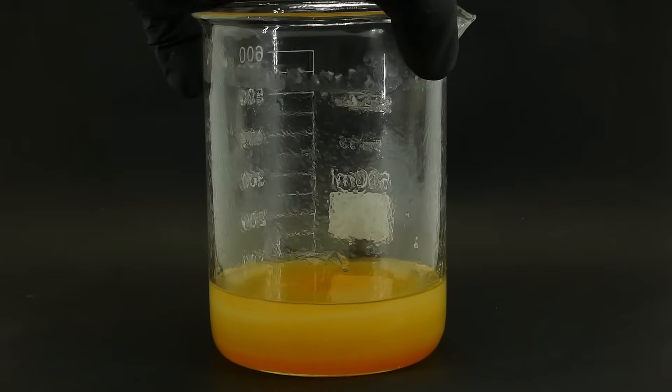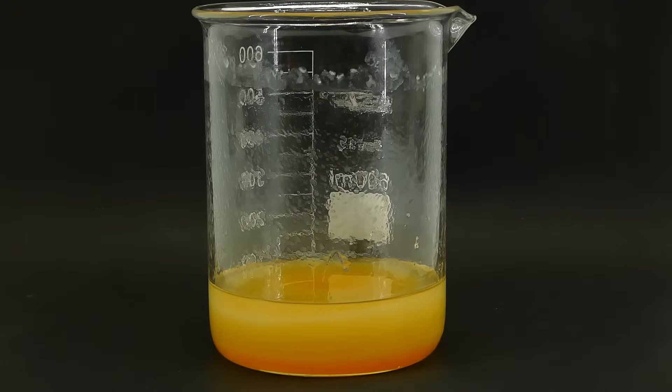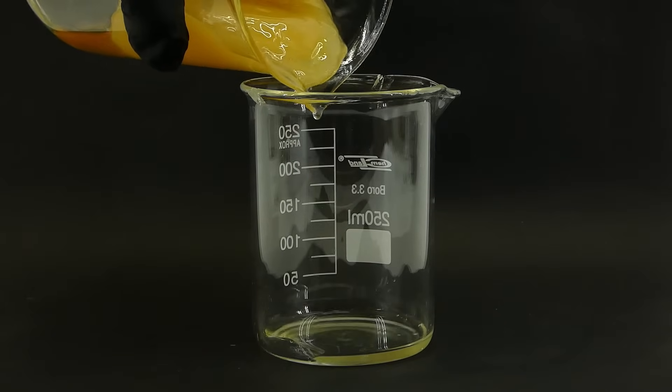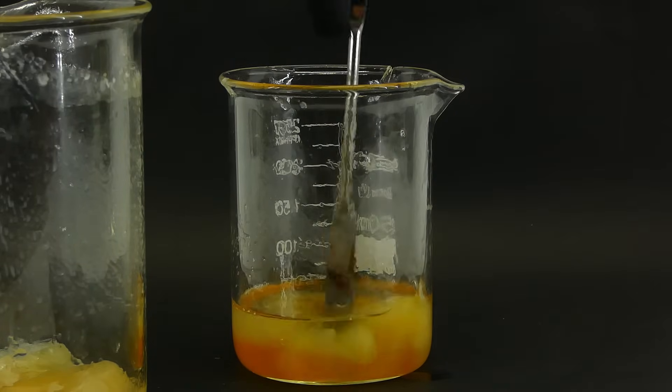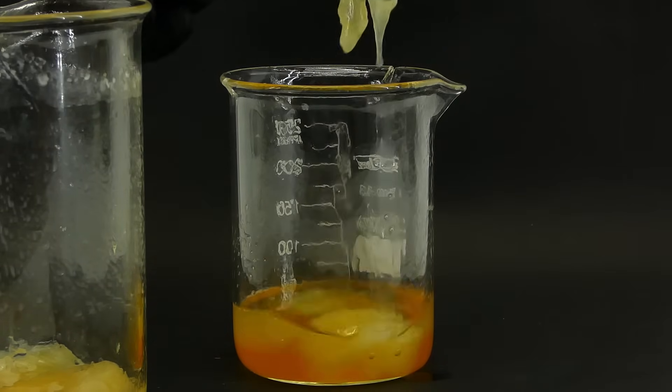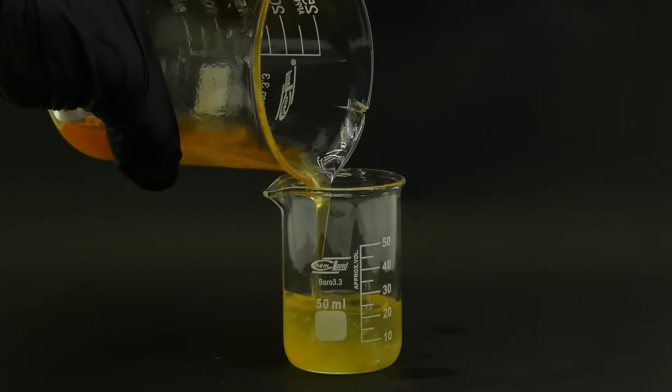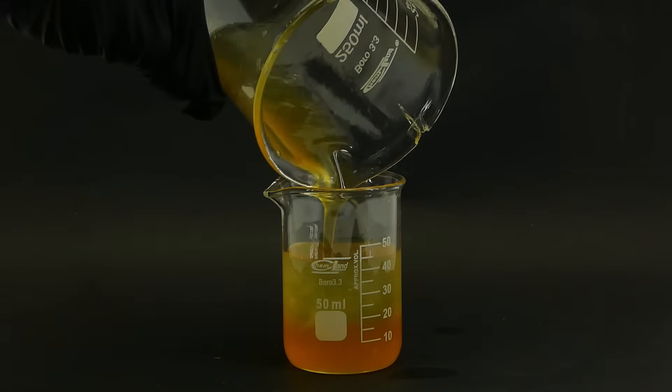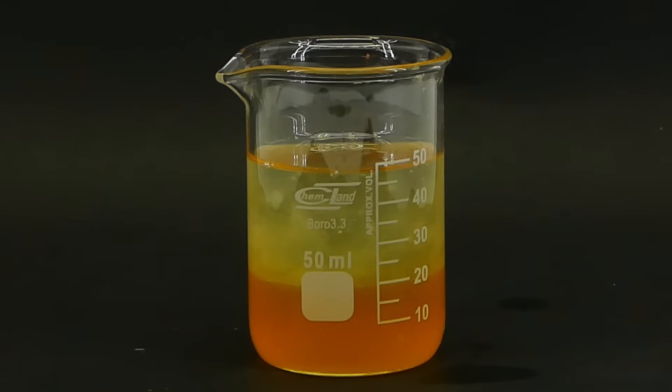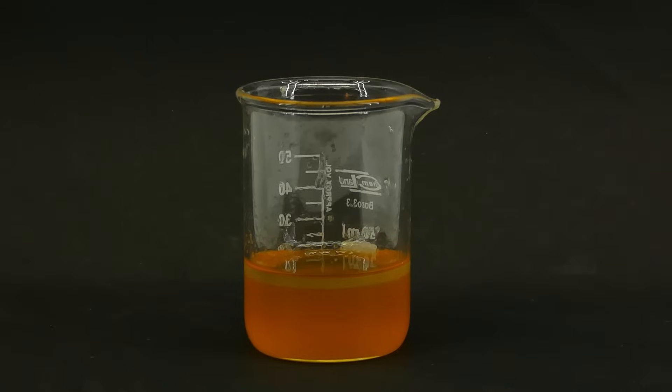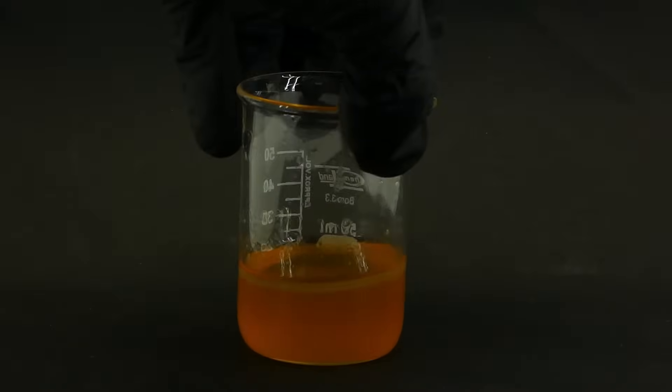It is still mixed with a lot of the gelled biodiesel, and to remove it, I transferred everything into a smaller beaker, and tried to scoop out some of the gel using a spatula, which worked only to some extent. When most of it was gone, I poured the mixture into an even smaller beaker, and I could now see two distinct layers form. I decanted off the upper one, which was still the biodiesel, and I was now left with some very crude glycerin.